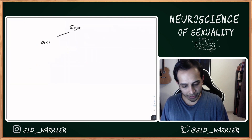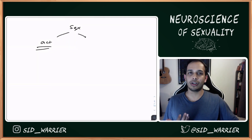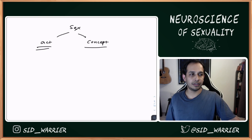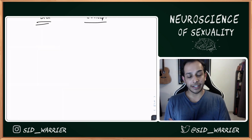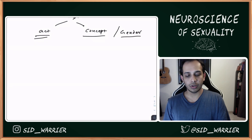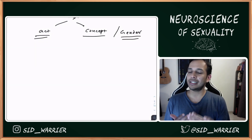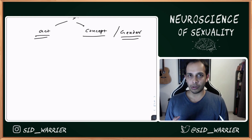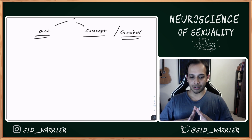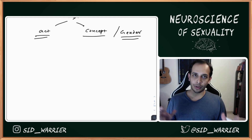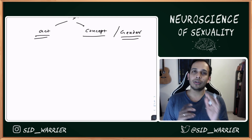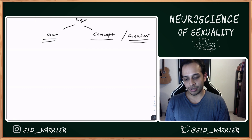We talked of sex as the act; now let's talk of sex as the concept, and here we have gender. When you say 'what is the sex of a boy, what is the sex of your child, what is the sex of this person,' you are actually talking about gender. To understand this, we need to understand how gender is formed, so let's go all the way back.